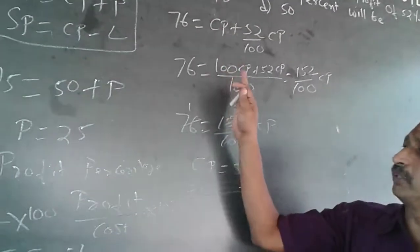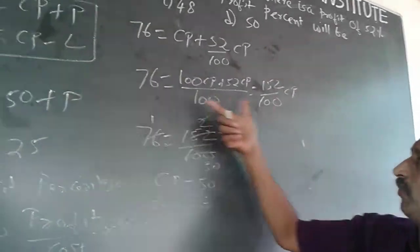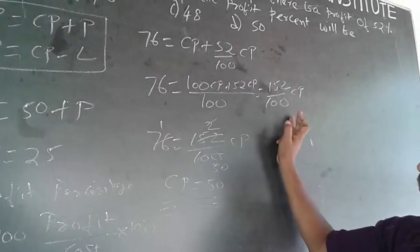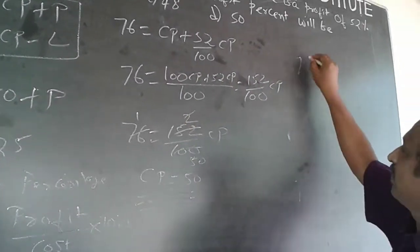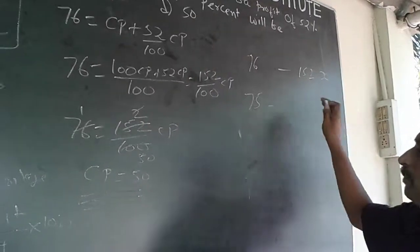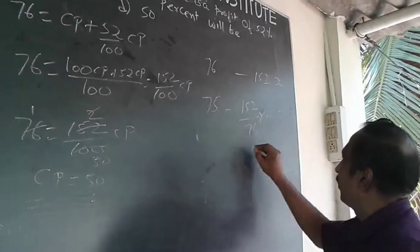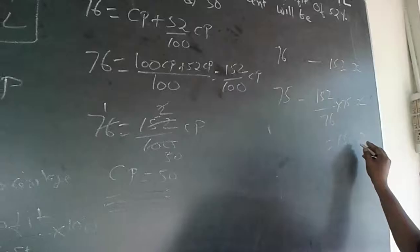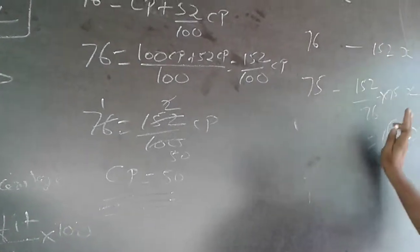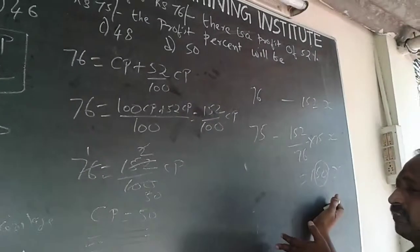Once you understand how this is done, it is very simple and you don't have to do all the working. Here is the shortcut: 76 is 152% of something (100 + 52). If 76 is 152 of something, what is 75? Applying the chain rule: 152/76 × 75 = 150 of X. Out of 100, 50 is extra, so it is 50% profit. Using this shortcut, you don't have to find the cost price at all.